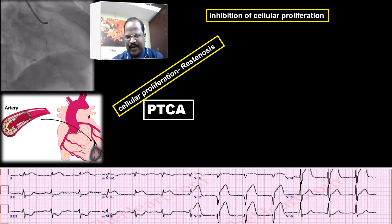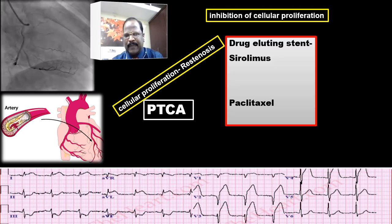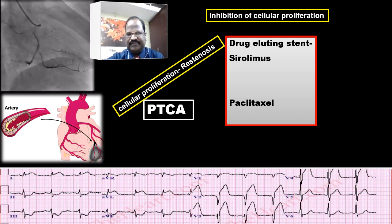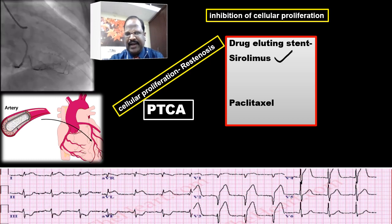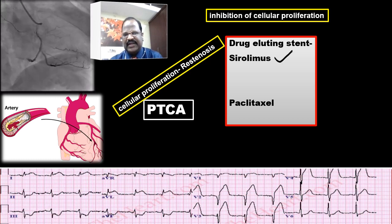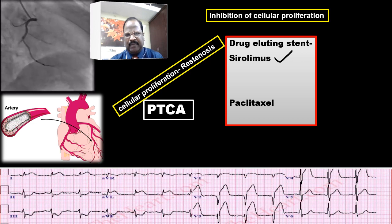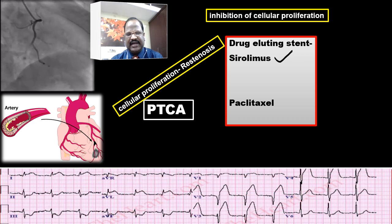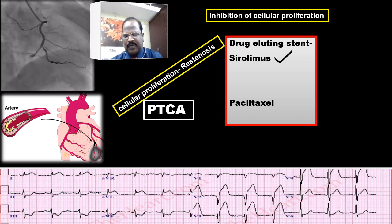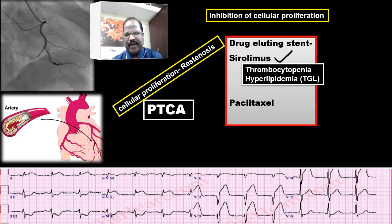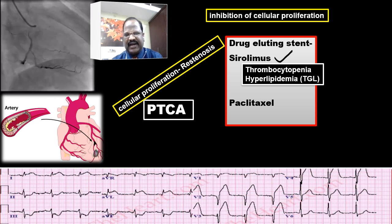The drugs in drug-eluting stents are: number one, sirolimus; number two, paclitaxel. Sirolimus is an immunosuppressant acting by inhibiting interleukin-2 at the receptor level — it is called an mTOR inhibitor. Its important adverse effects include immunosuppression causing secondary infection, thrombocytopenia, and hyperlipidemia in the form of hypertriglyceridemia.